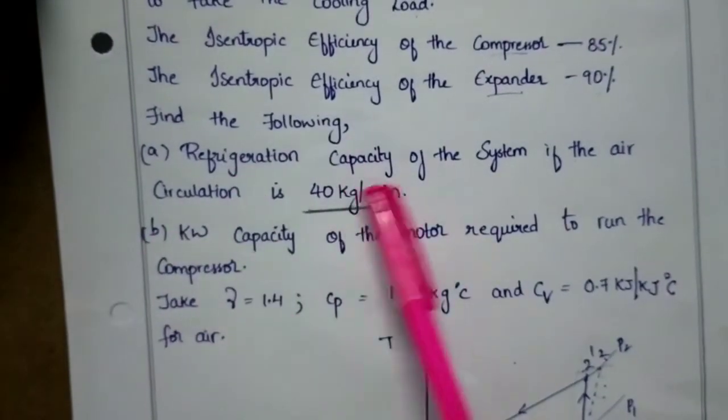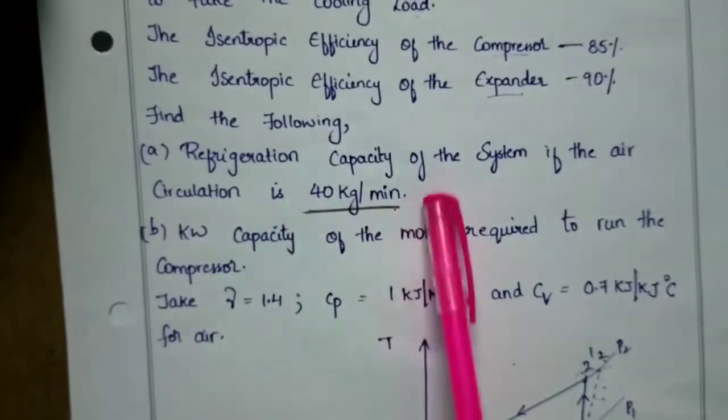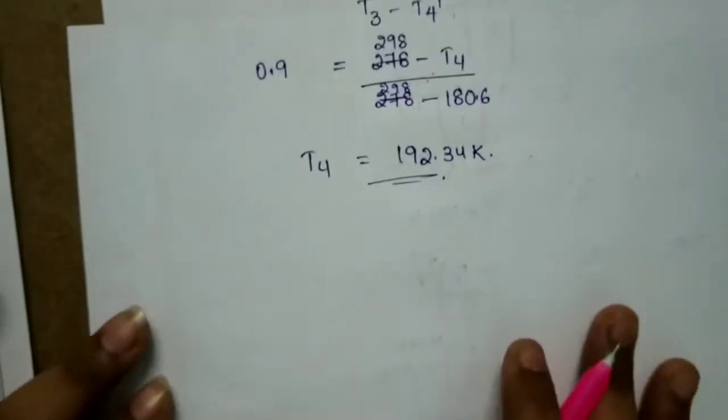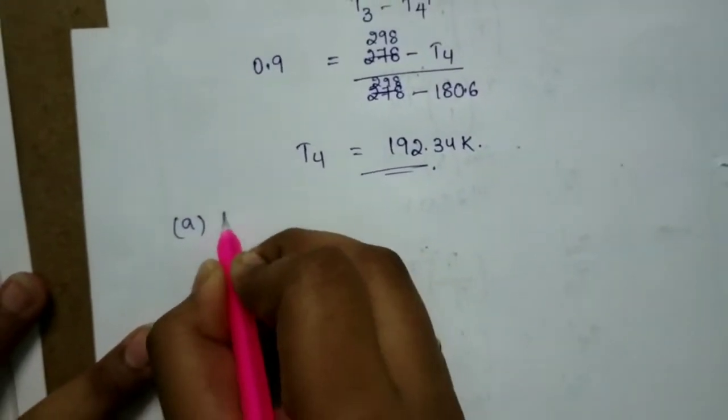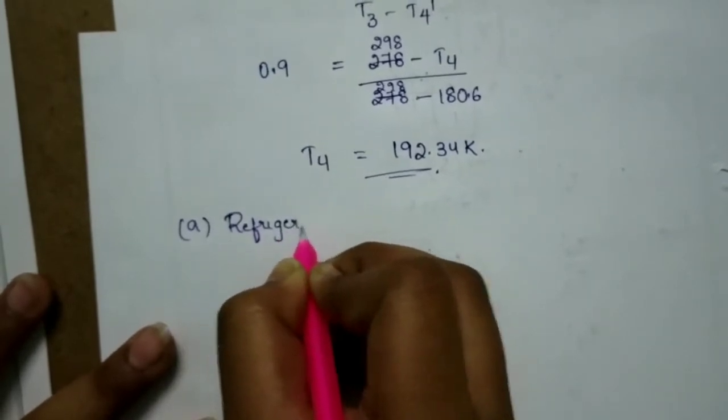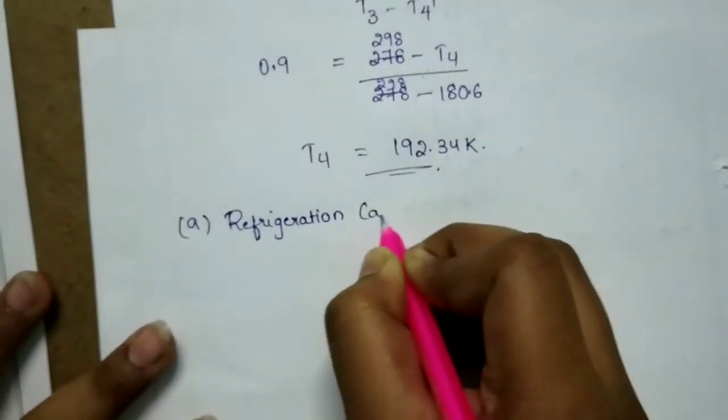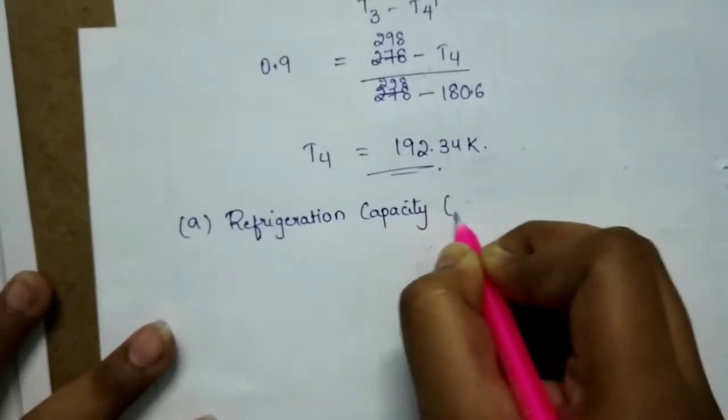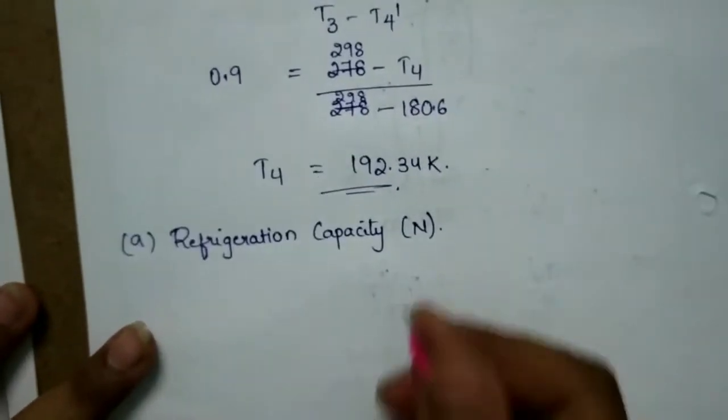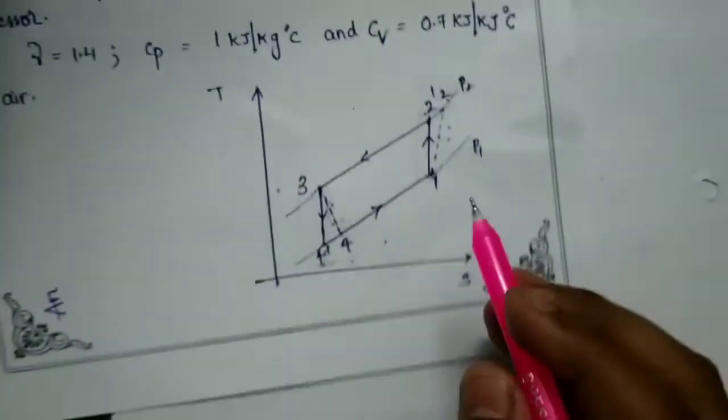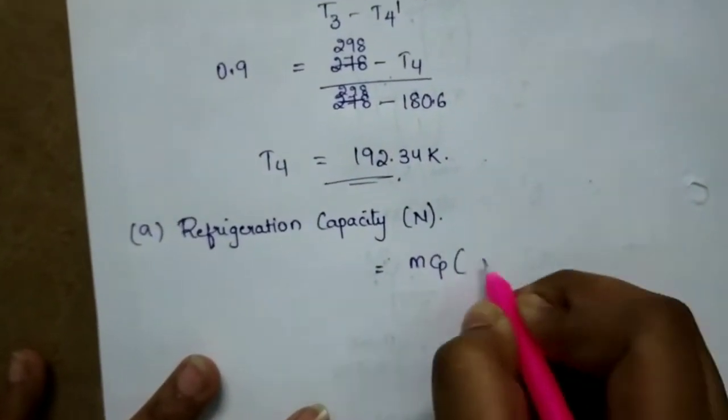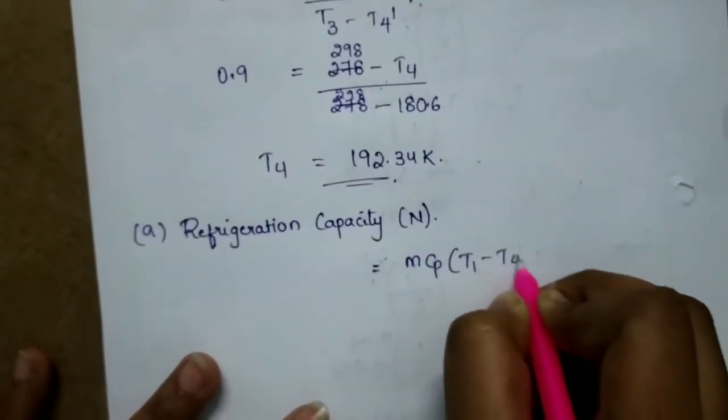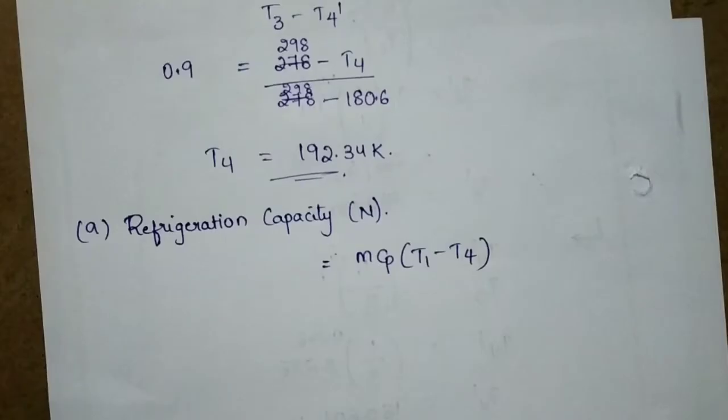Now the question is, what is the refrigeration capacity of the system if the air circulated is 40 kg per minute? Refrigeration capacity is 4 to 1, that is equal to M Cp times T1 minus T4.